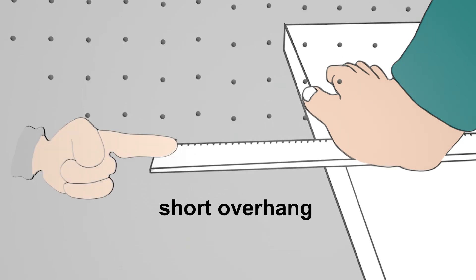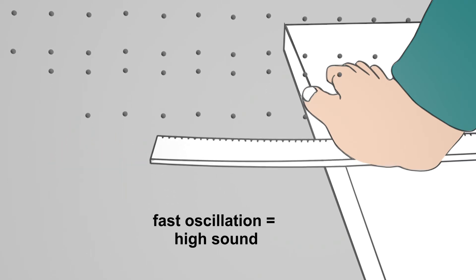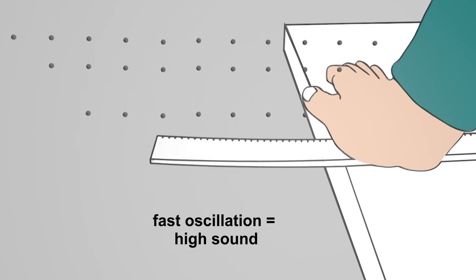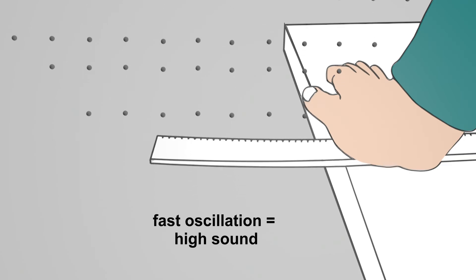Now you put the ruler on the table so that only one short piece protrudes. If you deflect the ruler, the ruler swings back and forth relatively quickly and quickly hits the surrounding air particles. These relatively fast oscillations are also transmitted to our eardrum and we hear a high sound.